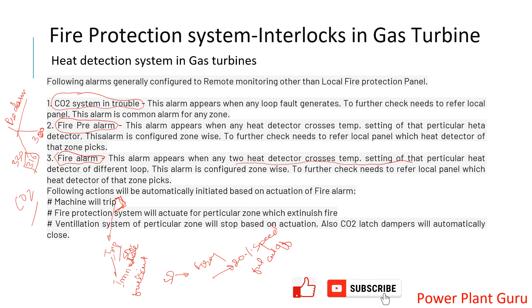After the trip, the CO2 suppression system actuates for the particular zone where the fire alarm is active. Before CO2 is released, all ventilation fans running in that zone will be stopped, and gravity dampers will close once the fans stop. There are also CO2 latch dampers that close when CO2 flows — the CO2 flow pressure initiates the closing of those dampers. These are the actions that occur during a fire alarm and CO2 system actuation.